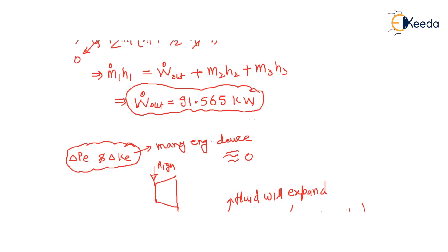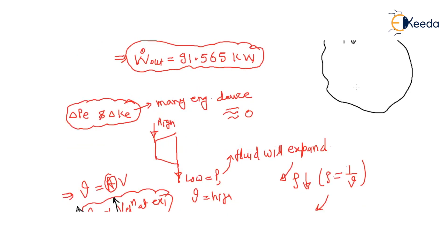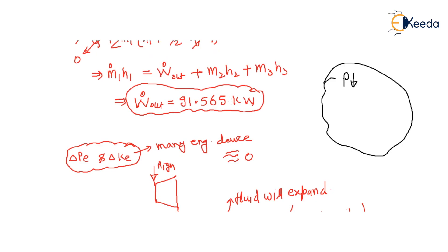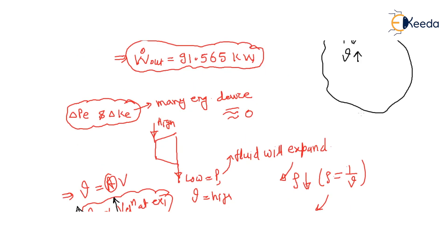In a turbine, pressure reduces — the fluid expands, specific volume increases, and exit velocity increases. But this increment in kinetic energy is negligible compared to the large change in enthalpy. Thank you very much.